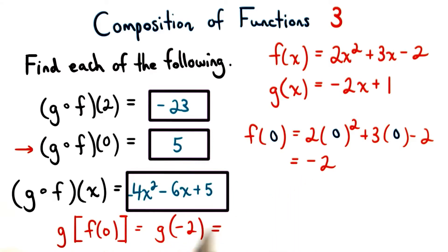So we just replace this value with negative 2. So letting x equal negative 2 for g, we get an output of positive 5. This is our second solution.